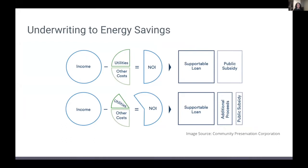The net operating income, or NOI, determines the net value of a building and is calculated by taking the effective revenues and deducting the estimated maintenance and operation costs, or MNO, as well as the real estate taxes and other costs.